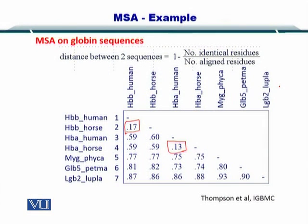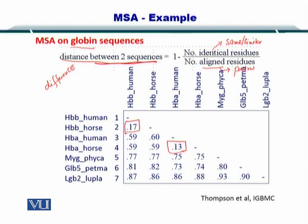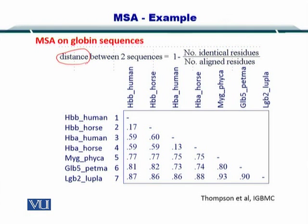Here we have an example of the globin protein from multiple species. The distance between two sequences, or simply the difference between two sequences, is equal to the number of identical or similar residues over the number of aligned residues in the pairwise alignment. You take this ratio, subtract it from one, and you arrive at the distance or difference between the two sequences. Once you have the distance between all sequences, you can construct something called a distance matrix.